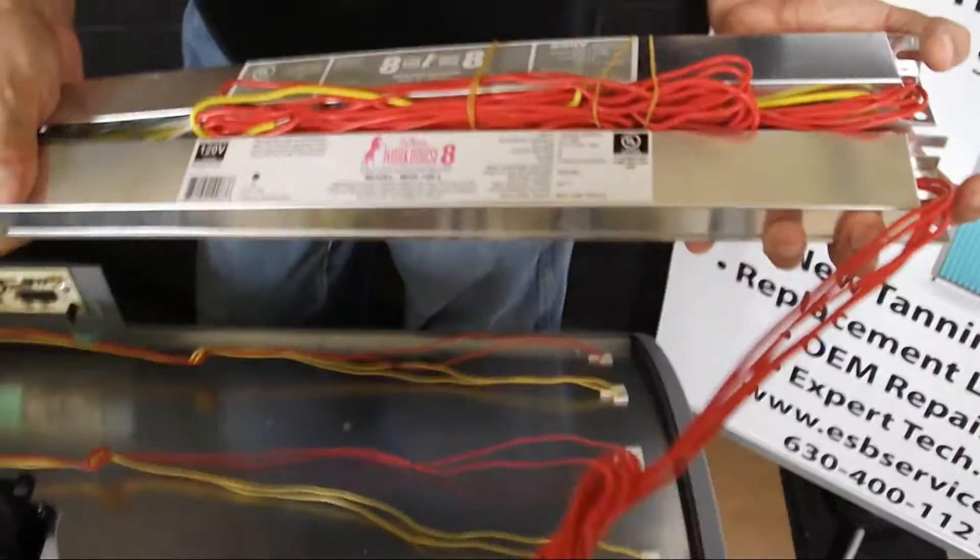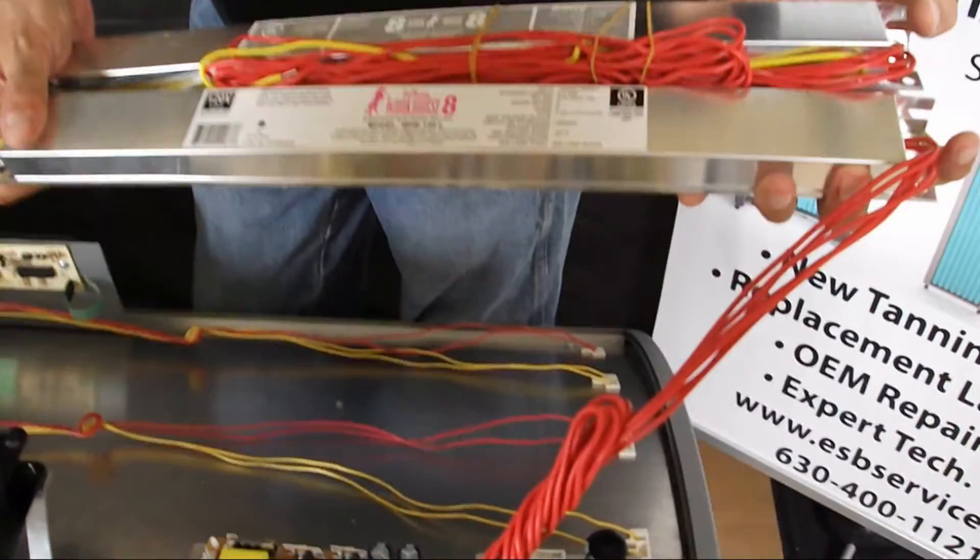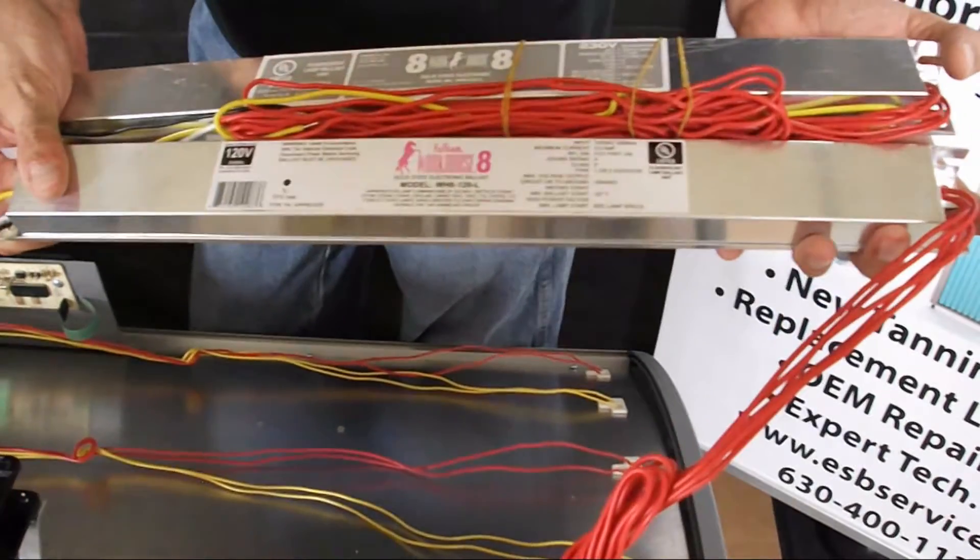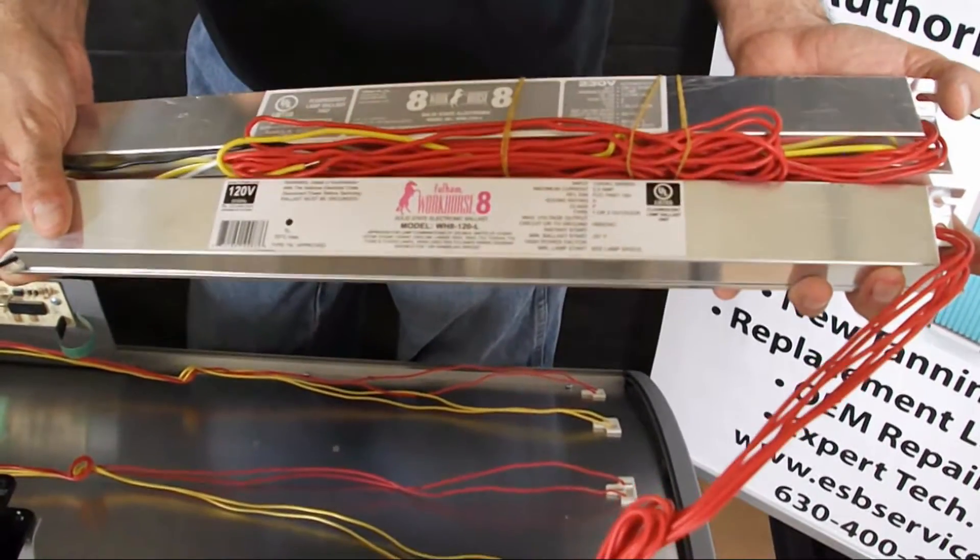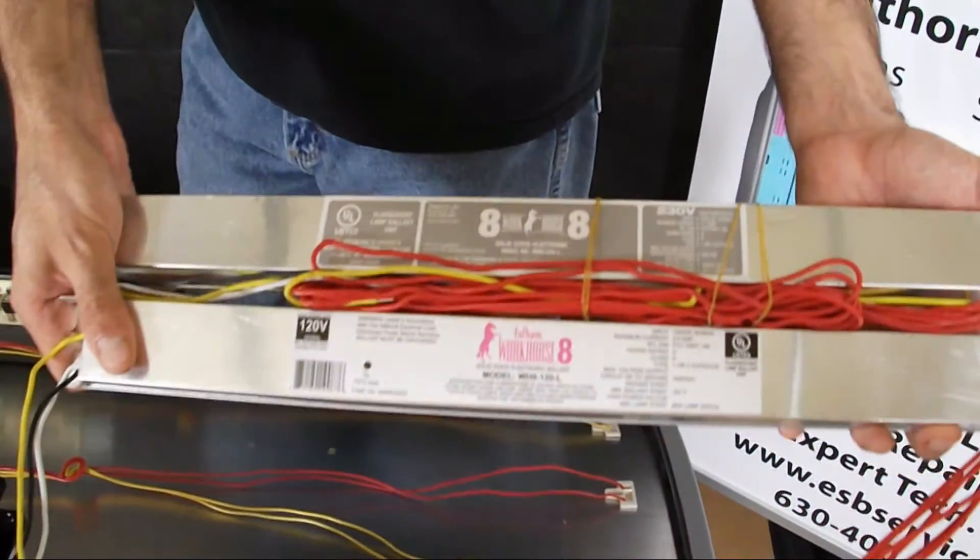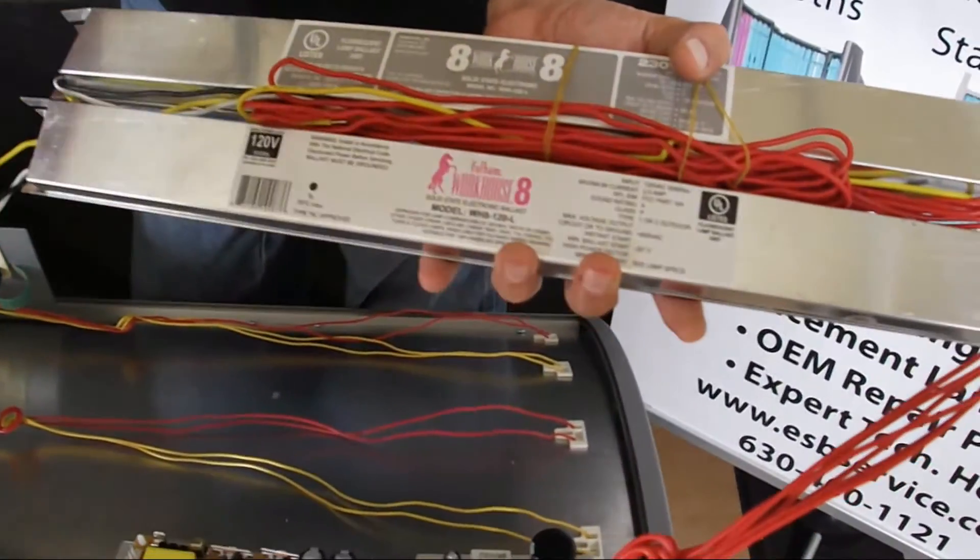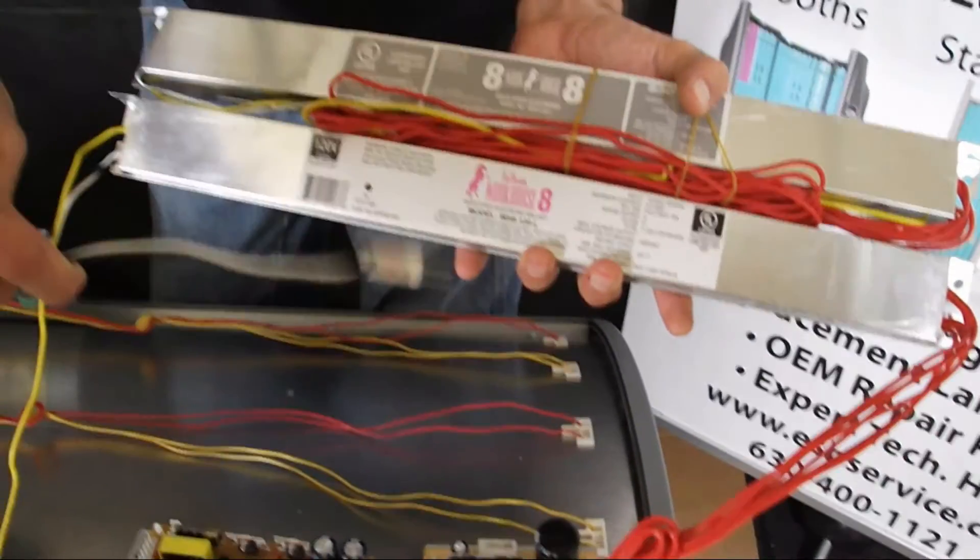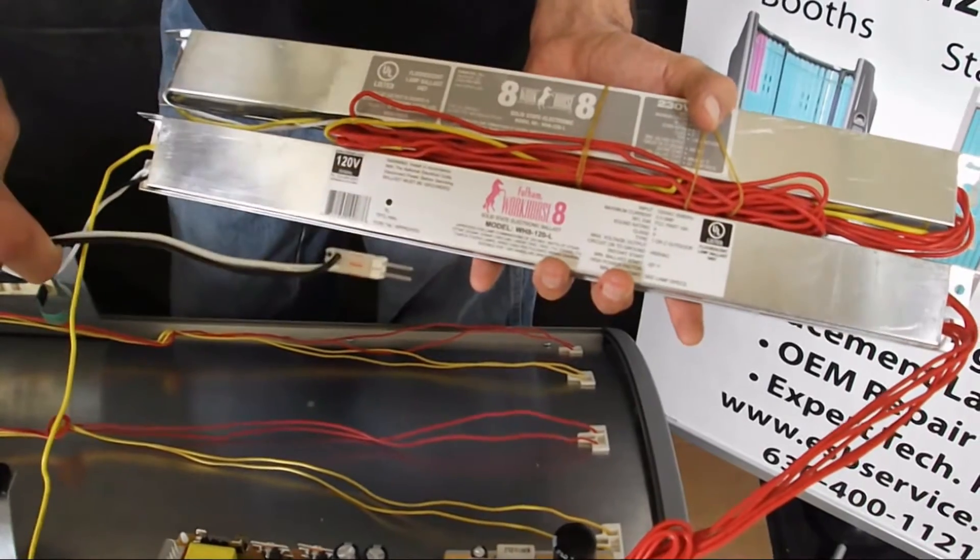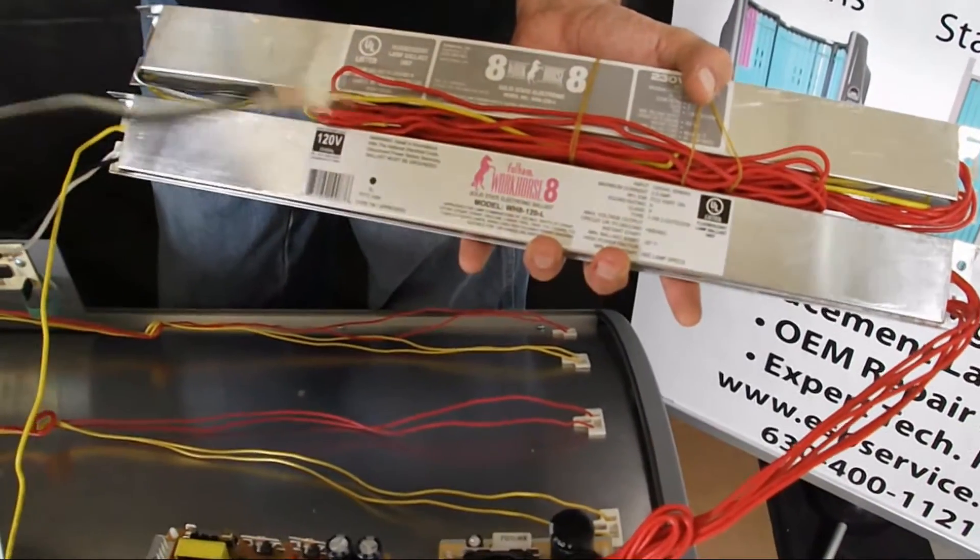This ballast, when it fails, the RT ballast, has a very low failure rate, but basically the lamp just would not light up. You move the lamp to another slot, it lights okay. You move it into a slot that has the RT ballast, and it's not going to light. You can also verify that you're getting power to the black and white wires. If you're getting power here and it's not illuminating the lamp, then you have a bad ballast.